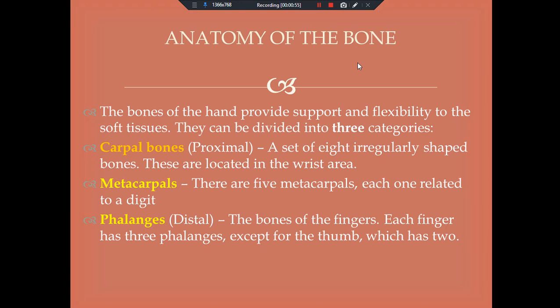The bones of the hand provide support and flexibility to the soft tissue. They can be divided into three categories. The first category is carpal bones, that is the proximal area — a set of eight irregularly shaped bones located in the wrist area. The second category is metacarpals; there are five metacarpals, each one related to a digit. Finally, the third category is phalanges, that is in the distal areas — the bones of the fingers. Each finger has three phalanges except for the thumb, which has two.